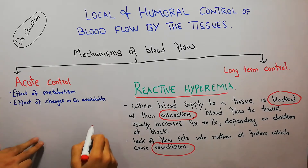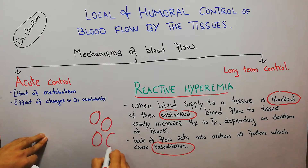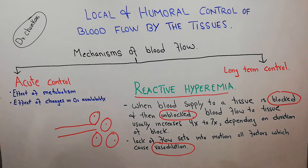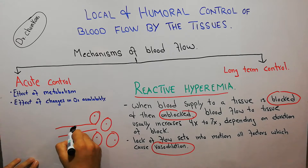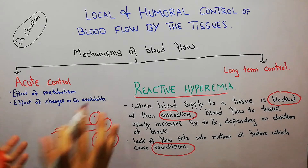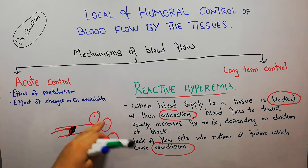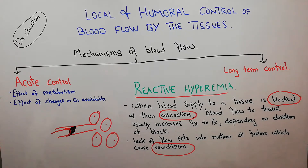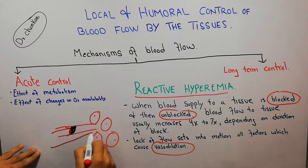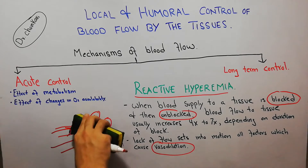So basically, if we have a tissue — these are tissue cells — and it is being supplied by a blood vessel, if a block occurs in this blood vessel, the blood supply to this tissue or these cells has been blocked. No blood is coming to this tissue. Now after some time, this block has been removed and the vessel has been unblocked.